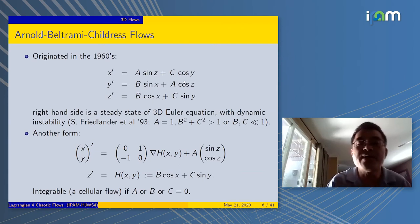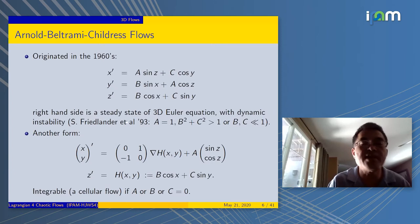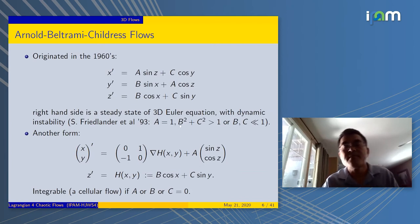If you take the divergence, it's automatically zero. That means it's incompressible or volume-preserving. This special flow field is a steady state solution of the 3D Euler equation. It's not always stable. Professor Friedlander studied the instability of such a flow in the 90s.